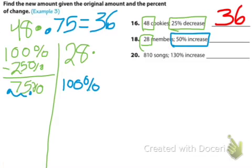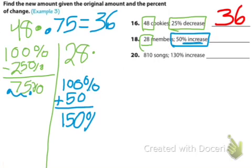100%. What are we doing to that? We're increasing it by 50. So we get 150%. We need to change it to a decimal. So move the decimal twice to the left. So we end up multiplying by 1.5. So 28 times 1.5 is 42.